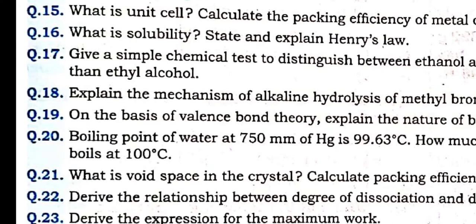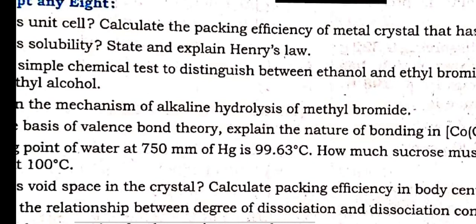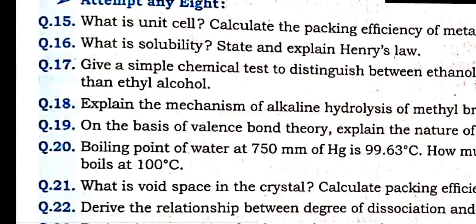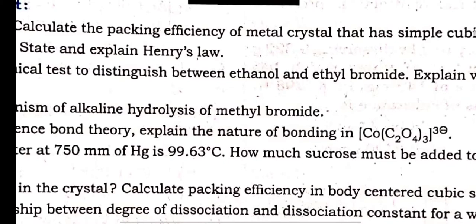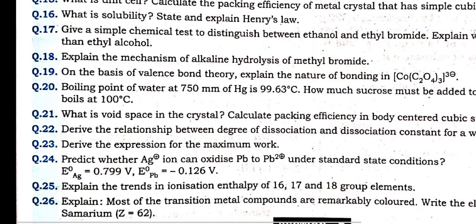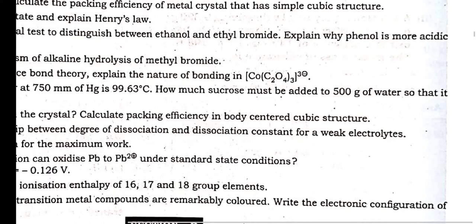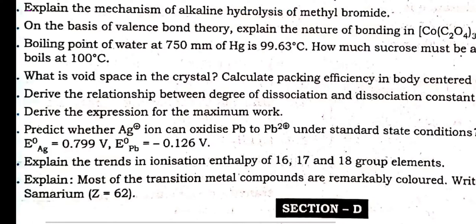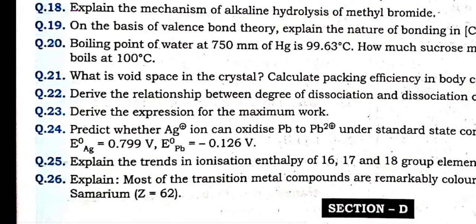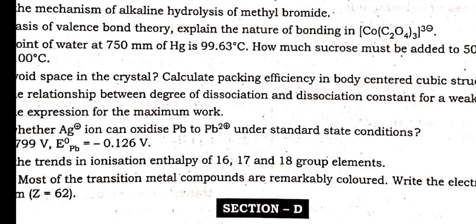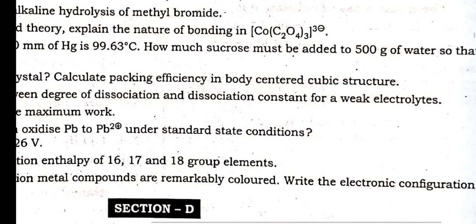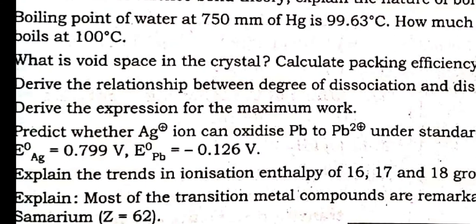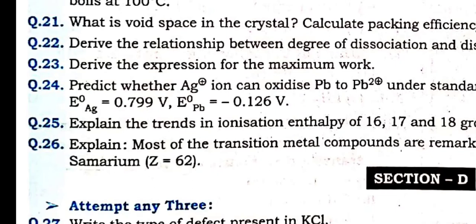Ethyl alcohol is not acidic in nature — litmus test is negative. Phenol is more acidic; litmus test for phenol will also show a response. Mechanism of alkaline hydrolysis of methyl bromide — that is SN2. On the basis of valence bond theory, nature of the complex. Boiling point of water and solution — numerical from the solution chapter: how much sucrose must be added to 500 grams of water so that boiling point is raised. What is vacant space in a crystal? That is interstitial space. Calculate packing efficiency of BCC — from solid state: simple cube and BCC. Relationship between degree of dissociation alpha and K — KA = alpha² × C — to prove for weak electrolyte. Very important derivation. Maximum work done from thermodynamics. Predict if Ag⁺ can be oxidized to Pb²⁺ or not — checking E°cathode minus anode. Explain trend of ionization enthalpy from group 16, 17, 18 elements.